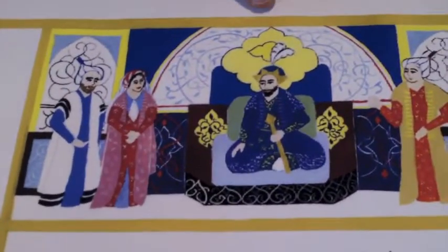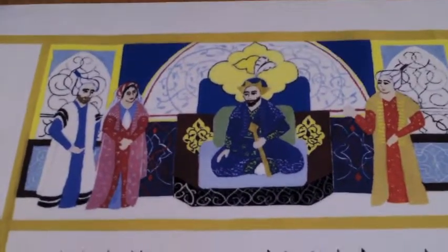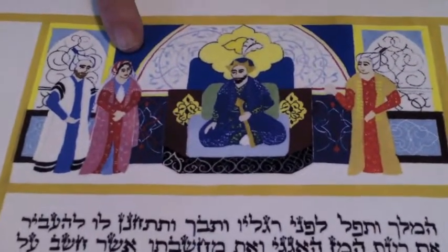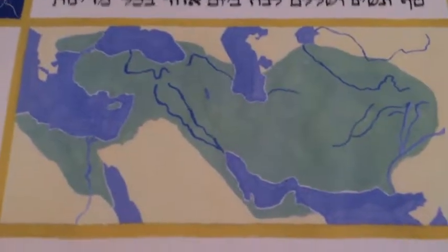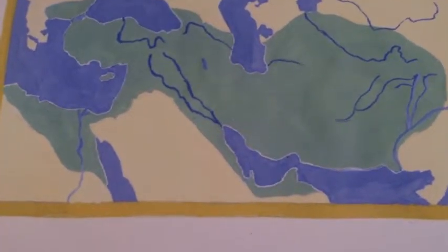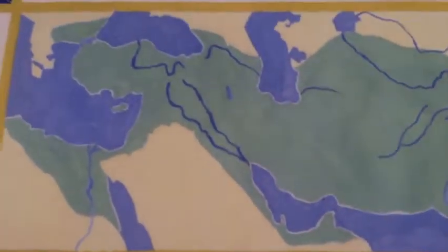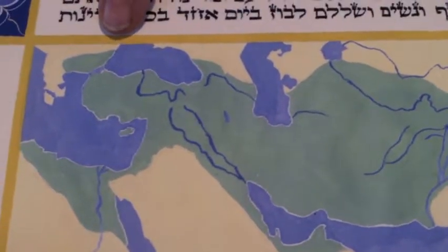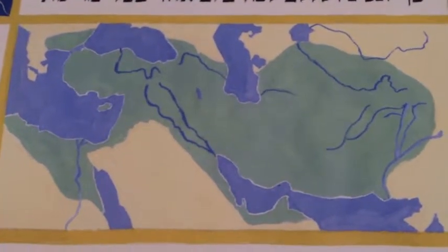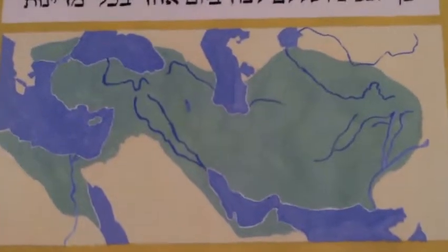Ahasuerus appoints Mordecai to be the ruler, the vizier next in power to him. And here is Queen Esther — they are being awarded power. This is a map of the Empire of Shushan. It says twice in the Megillah that Ahasuerus ruled 127 provinces from Kush to Hodu — from Ethiopia to India. This is based on a map of Xerxes I's empire, which relates exactly to Ahasuerus' empire. And often Xerxes is related to Ahasuerus.